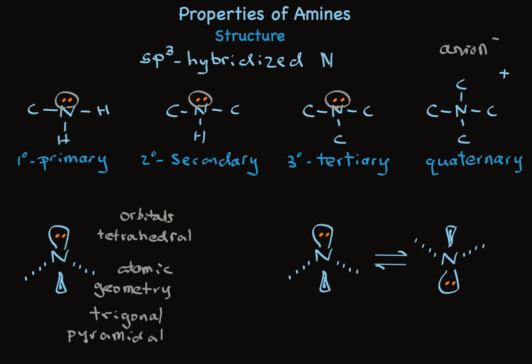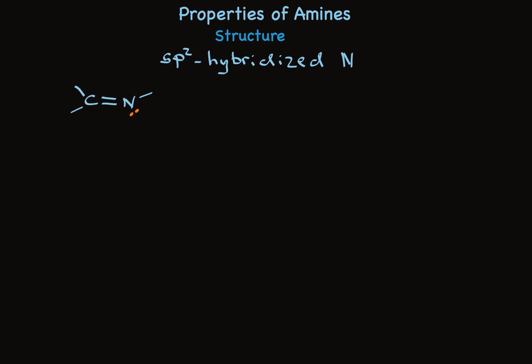Let's take a look at some important structures for SP2 hybridized nitrogen. There are compounds called imines that have a carbon-nitrogen double bond, and both those atoms are SP2 hybridized. So the carbon has a p-orbital that can be adjacent to the nitrogen p-orbital. They line up and overlap, which fits our picture of a double bond.